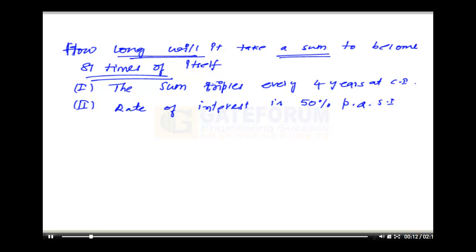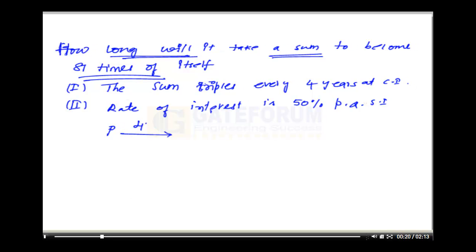Now let us look into statement 1. The sum triples every 4 years at compound interest. Initially let us take that sum as P, after 4 years it is becoming 3P which is triple.